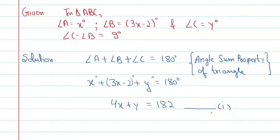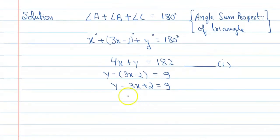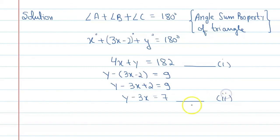Now, the second condition given is that angle C minus angle B is equal to 9 degree. From this condition, angle C is y and angle B is 3x minus 2. So y minus (3x minus 2) equals 9, which gives y minus 3x plus 2 equals 9, therefore y minus 3x equals 7. From equation 2, we can say y equals 7 plus 3x. Mark this as equation 3.